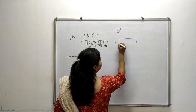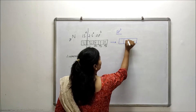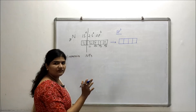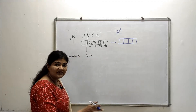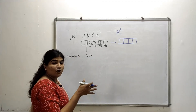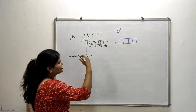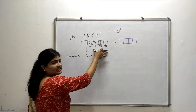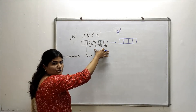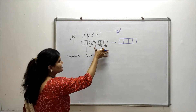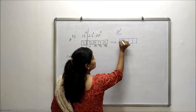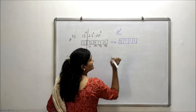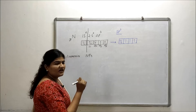When nitrogen is in the sp3 hybridized state, it involves 1 s and 3 of the 2p orbitals to form sp3 hybrid orbitals. So the 4 sp3 hybrid orbitals are of equal energy and equal shape, formed using 1 s and 3 p orbitals of nitrogen.